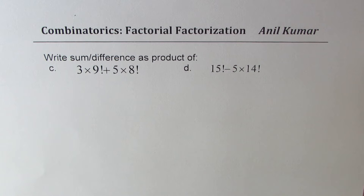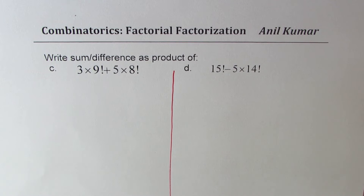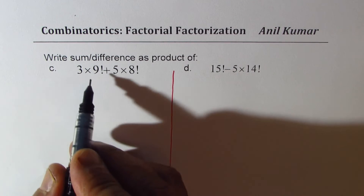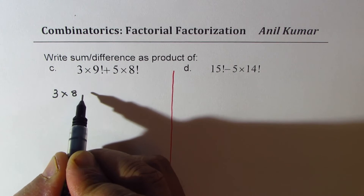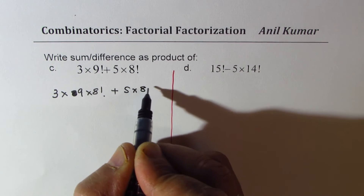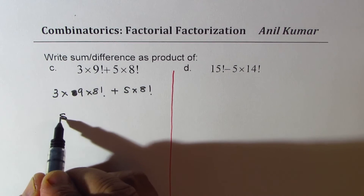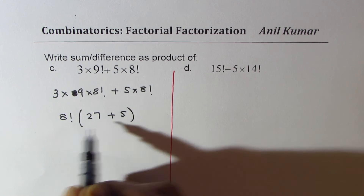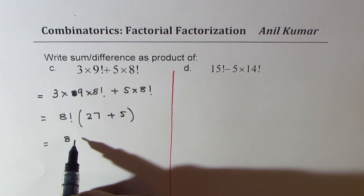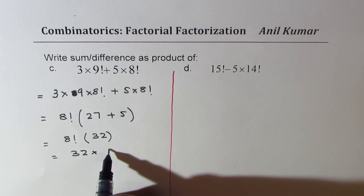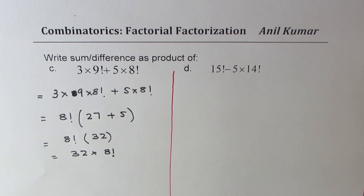Let's see how to do part C: 3 times 9 factorial plus 5 times 8 factorial. I write 9 factorial as 9 times 8 factorial, so we have 3 times 9 times 8 factorial plus 5 times 8 factorial. Now 8 factorial is common, so taking it out we get 9 times 3, which is 27, plus 5 in the brackets. So we get 8 factorial times 32. The answer is 32 times 8 factorial.